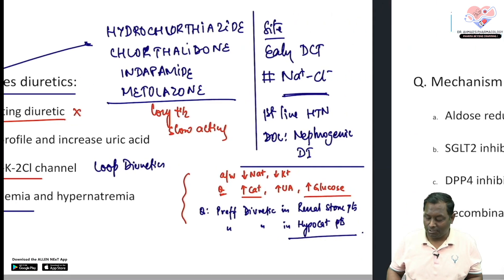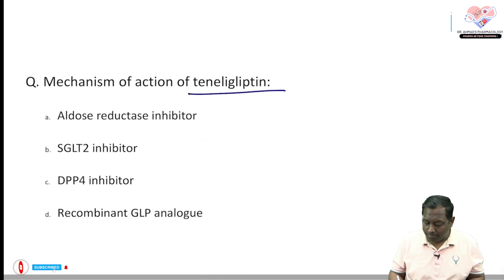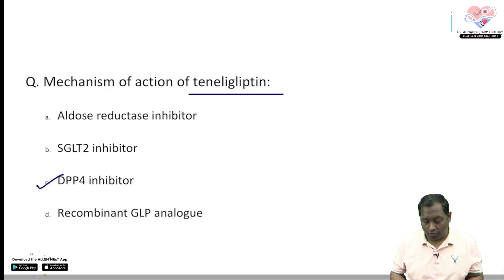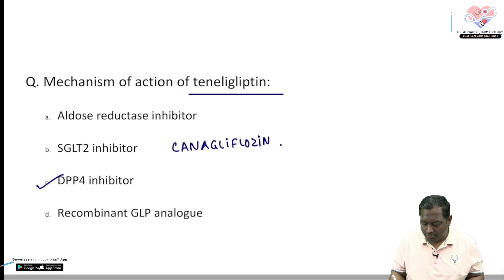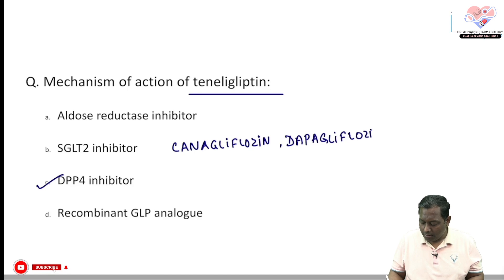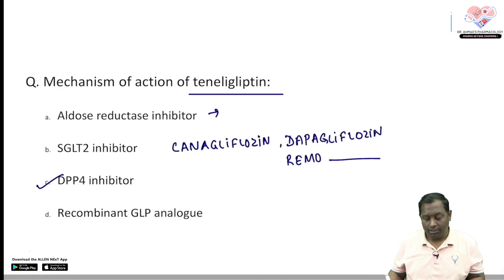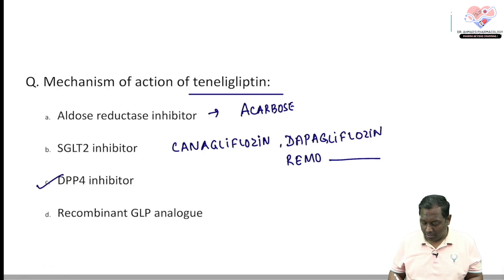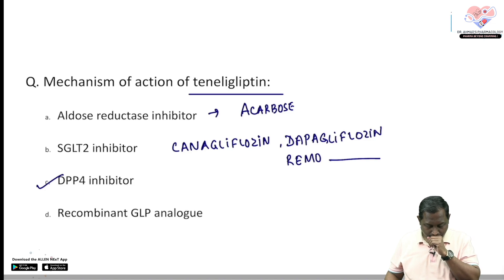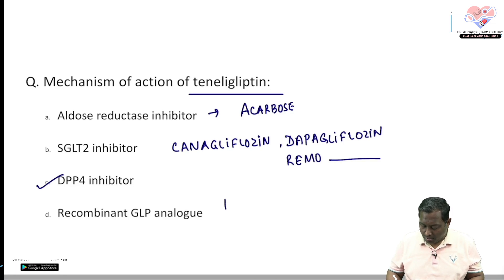The next question: mechanism of action of teneligliptin — all gliptins are DPP4 inhibitors. SGLT2 inhibitors are the gliflozins: canagliflozin, dapagliflozin, remogliflozin, avagliflozin. Aldose reductase — wait, actually the alpha-glucosidase inhibitors are acarbose, voglibose, and miglitol. Recombinant GLP-1 analogues include liraglutide.